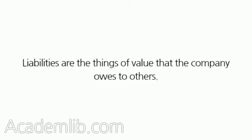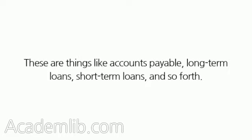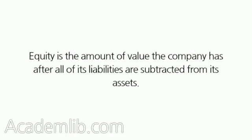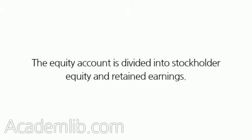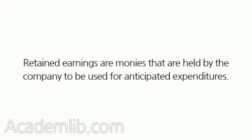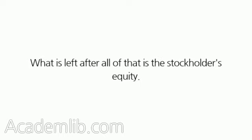Liabilities are the things of value that the company owes to others — things like accounts payable, long-term loans, short-term loans, and so forth. Equity is the amount of value the company has after all of its liabilities are subtracted from its assets. The equity account is divided into stockholder equity and retained earnings. Retained earnings are monies held by the company for anticipated expenditures. What is left after all of that is the stockholder's equity.